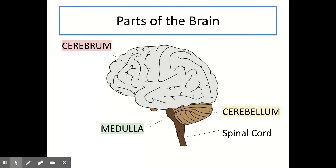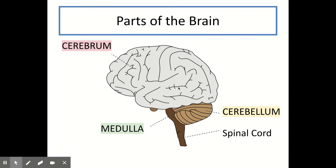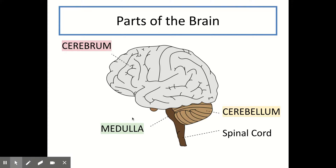The next thing you need to understand is the brain. You need to be able to label the parts of the brain and describe each part's function. The brain is split into three parts: the cerebrum, the cerebellum, and the medulla. The cerebrum is the large part on the top — think of it like a drum. Cerebellum means 'little brain' and is the part at the back which looks like a mini brain. The medulla is at the front, coming down and joining to the spinal cord.